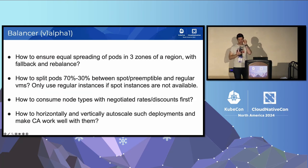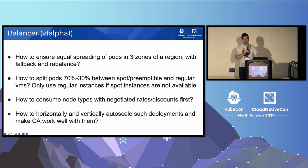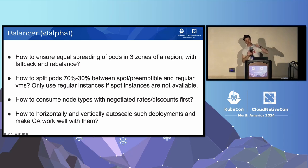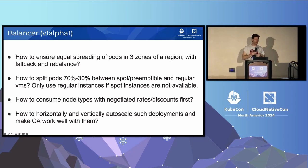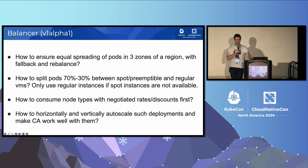The Balancer project is meant to address more complicated pod distribution in a cluster-autoscaler-enabled cluster: how to ensure equal spreading of pods in three zones of a region with fallback and rebalance, how to split pods 70/30 between spot or preemptible versus regular VMs, how to consume node types with negotiated discounts first then fall back to vanilla node types, and how to horizontally and vertically autoscale such deployments. There is a V1 Alpha 1 prototype. If this sounds interesting, this project could use your help.